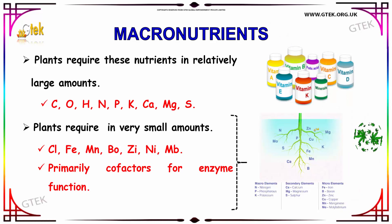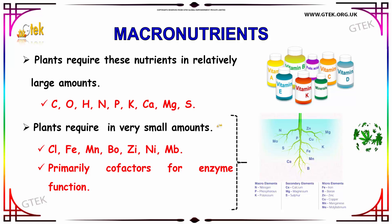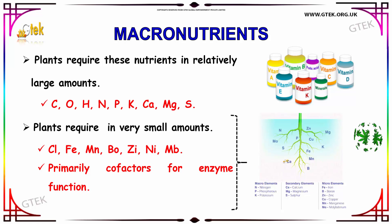Now let us discuss macronutrients. Plants require macronutrients in relatively large amounts — these include carbon, oxygen, hydrogen, nitrogen, phosphorus, potassium, calcium, manganese, and sulfur. Plants also require certain nutrients in very small amounts, including chlorine, iron, manganese, boron, zinc, nickel, and molybdenum. These primarily serve as cofactors for enzyme functions.